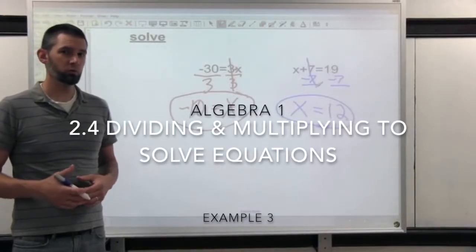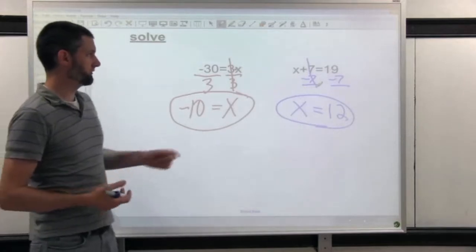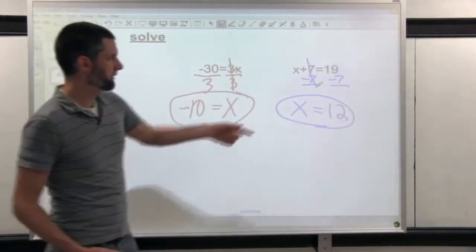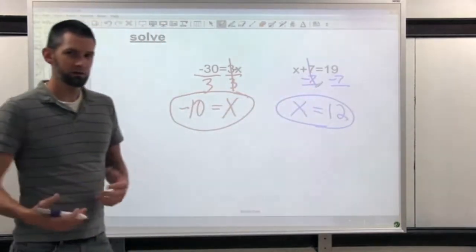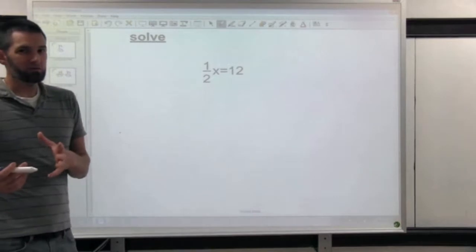When we're solving an equation, what we're really doing is we're doing the opposite, trying to get the x all by itself. Whether it's multiplied, we divide to get that x by itself, or if it's added, we subtract to get that x all by itself. But let's take a look at one that isn't quite the same.